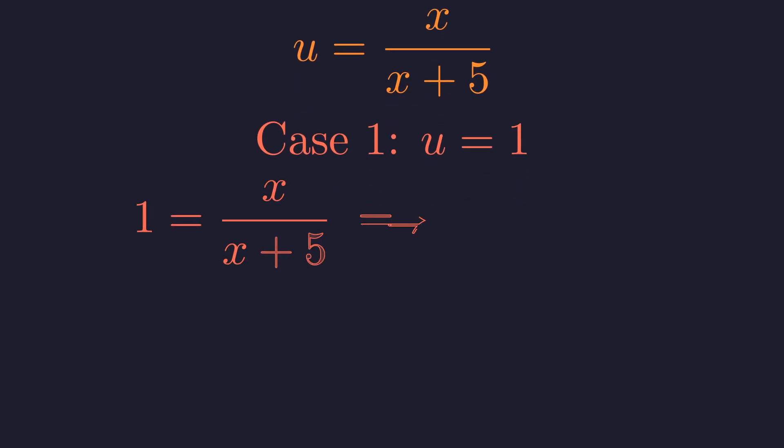We have two candidates for u. We must verify which one yields a valid x. Recall our original definition for u. First, we test the case where u equals 1. This implies x plus 5 equals x. Subtracting x leads to 5 equals 0, which is a contradiction. Therefore, u equals 1 is invalid.